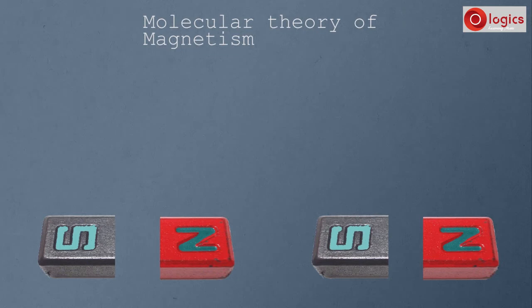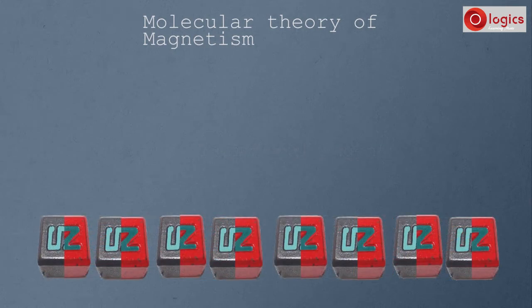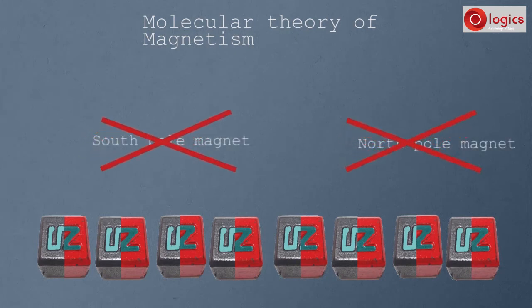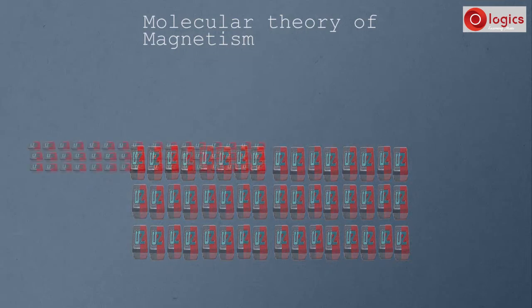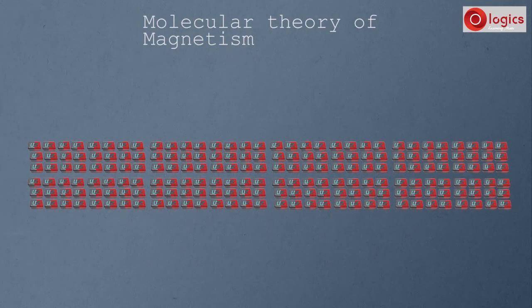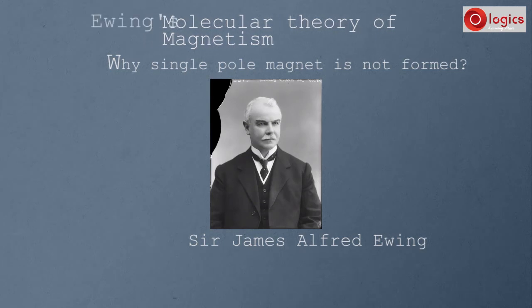If we break those two magnets again, we get four magnets — each piece is an individual magnet with south and north poles. Further breaking these magnets into small pieces still produces no single-pole magnet. Each piece remains an individual magnet. This was explained by Sir James Alfred Ewing through his theory known as Ewing's molecular theory of magnetism.